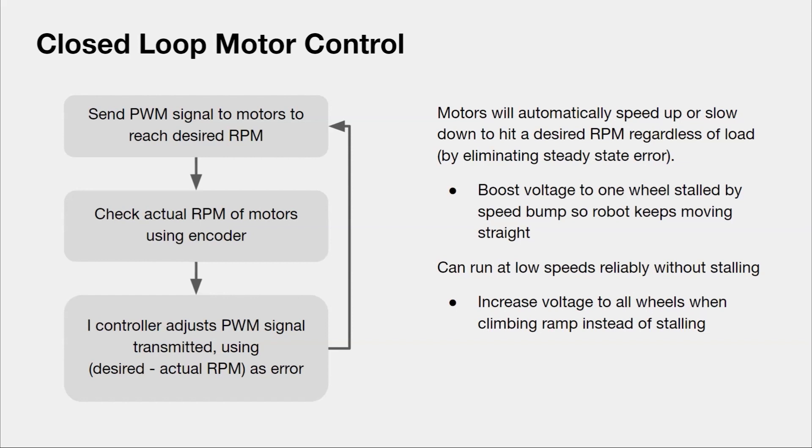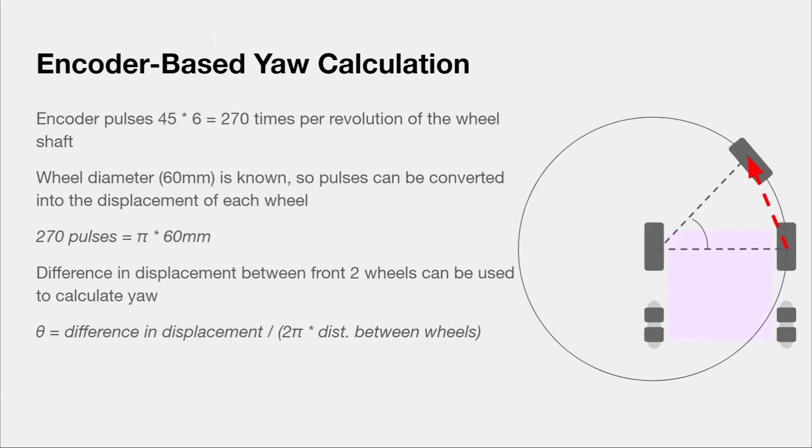This is useful when, let's say, one wheel is stalled on a speed bump while the rest are not. The system would boost the voltage of that wheel so the robot moves forward instead of turning. It's also useful for running at low speeds without stalling under increased load, like up the ramp, since the I controller will automatically oscillate the PWM value such that the average speed is the desired RPM. We use our motor encoder pulses to determine the exact displacement that each wheel travels and subsequently the yaw of the robot during a turn. Knowing the diameter of a wheel, we can calculate the conversion between number of pulses and distance traversed by the wheel. We can then use the difference in displacement of the wheels to determine the resultant yaw of the robot.